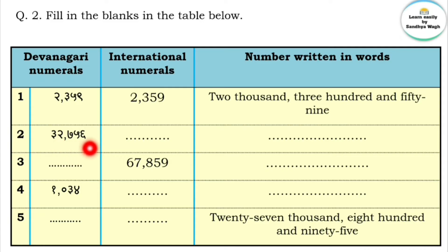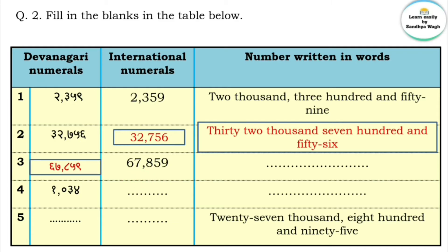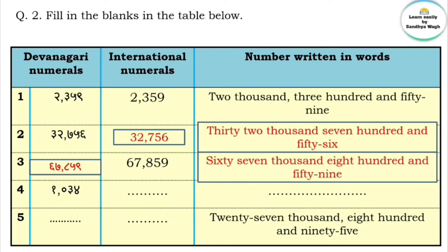Next entry: 32,756. In International Numerals it is 32,756. In words it is thirty-two thousand seven hundred and fifty-six. Similarly for 67,859.